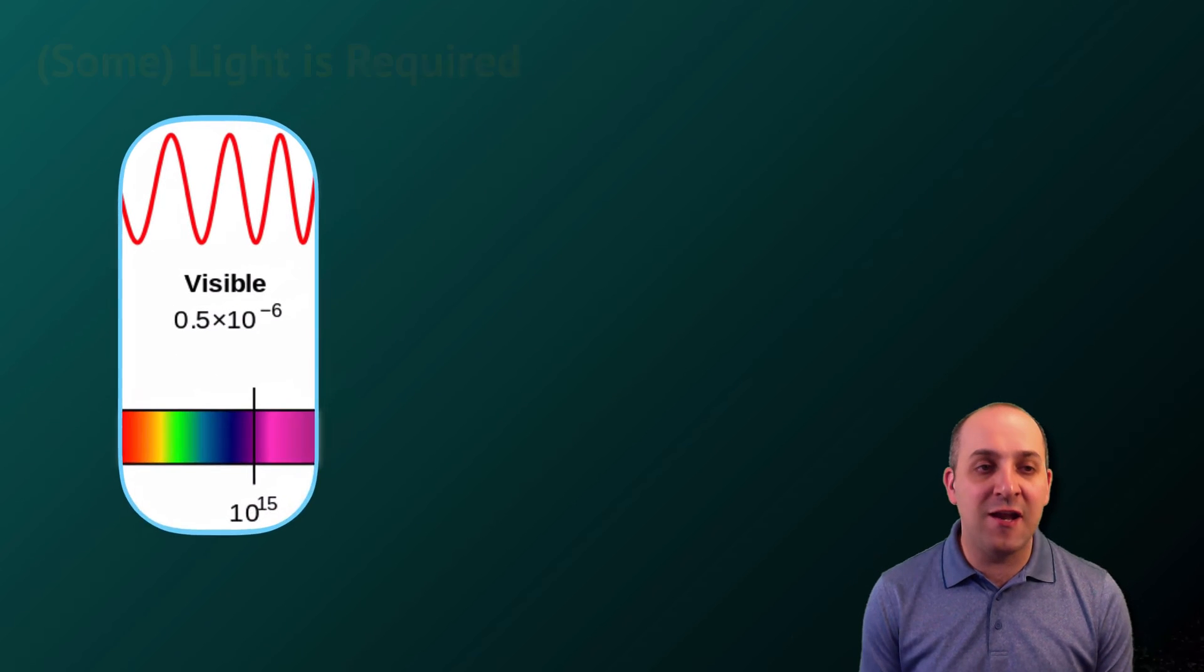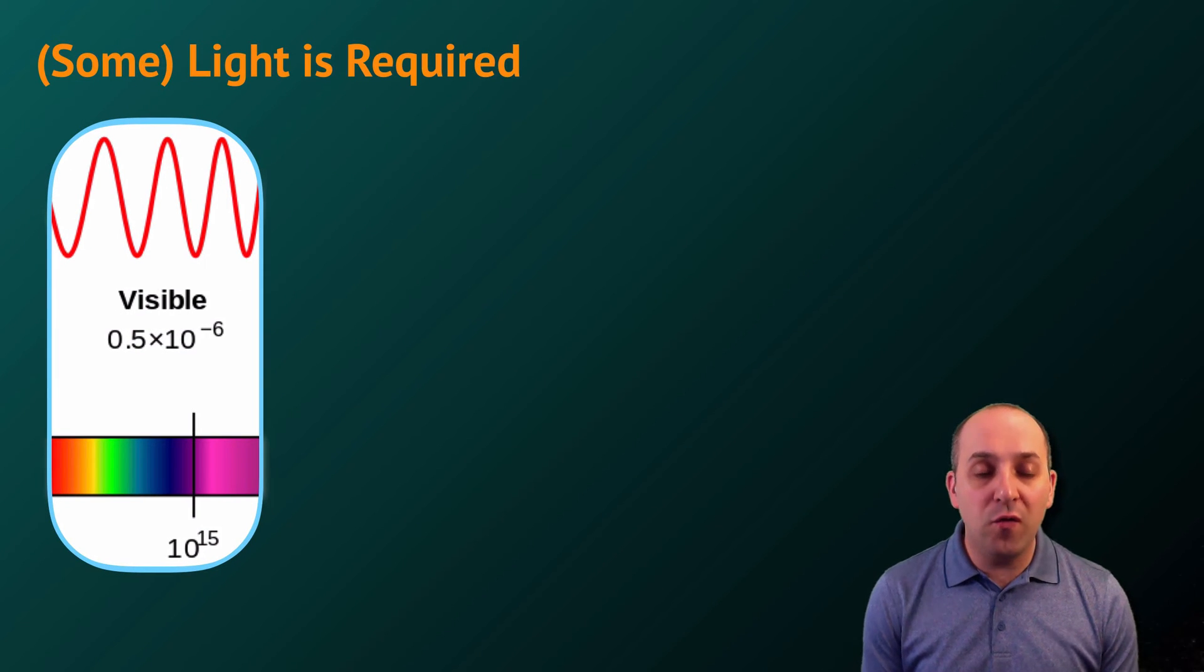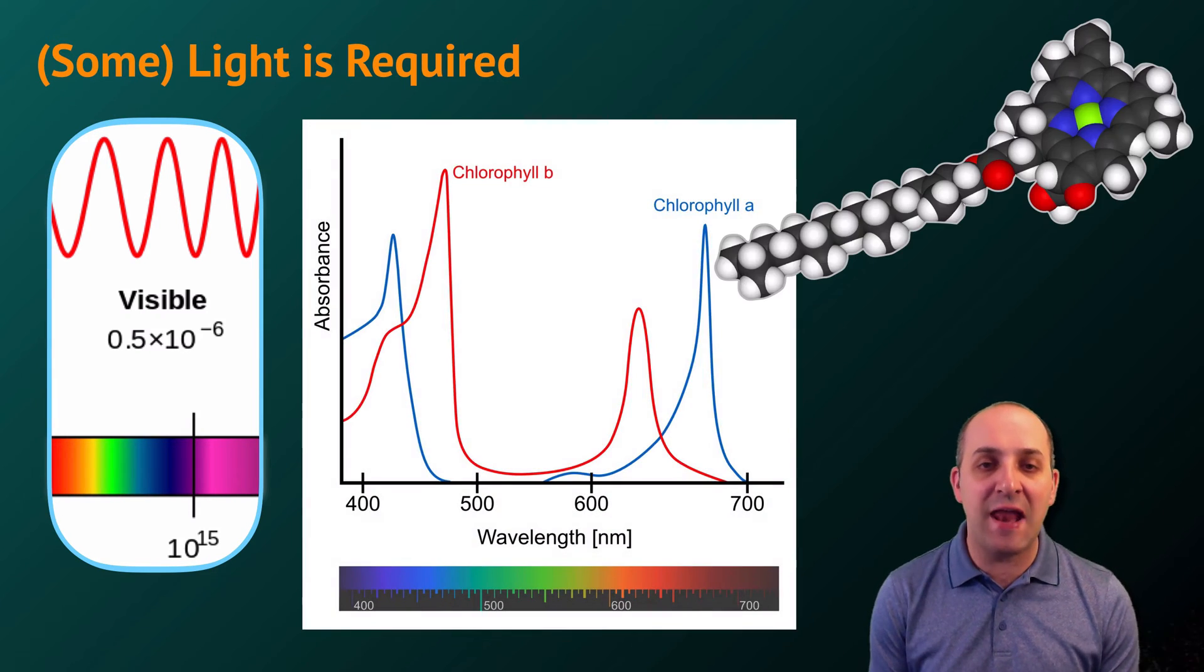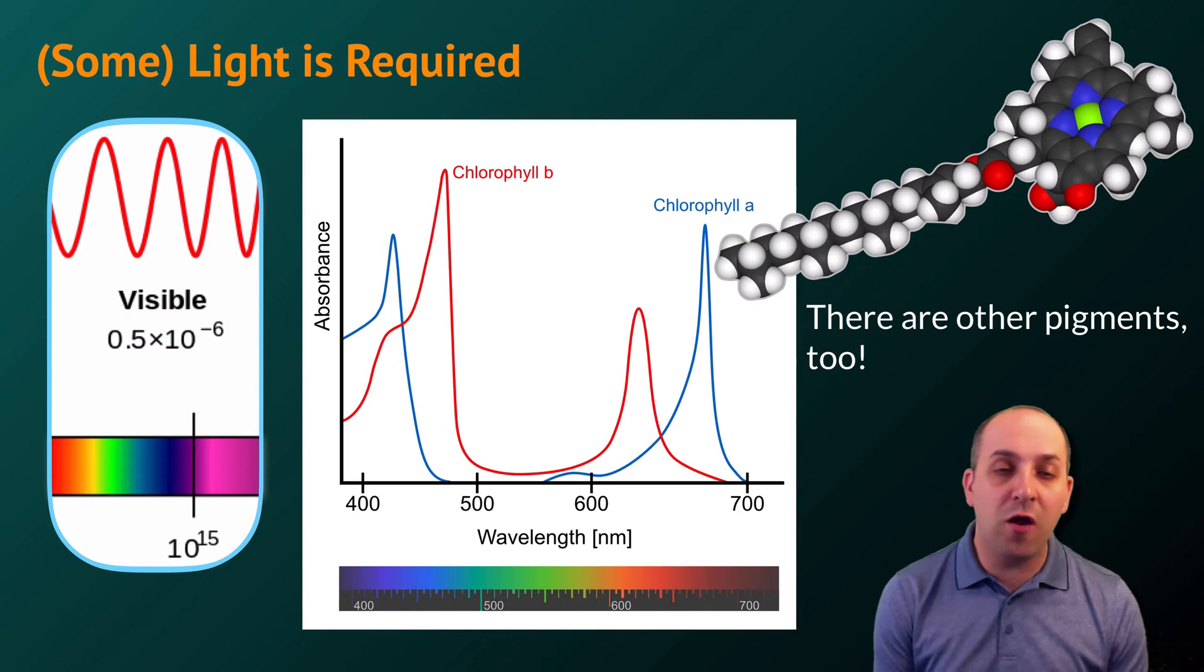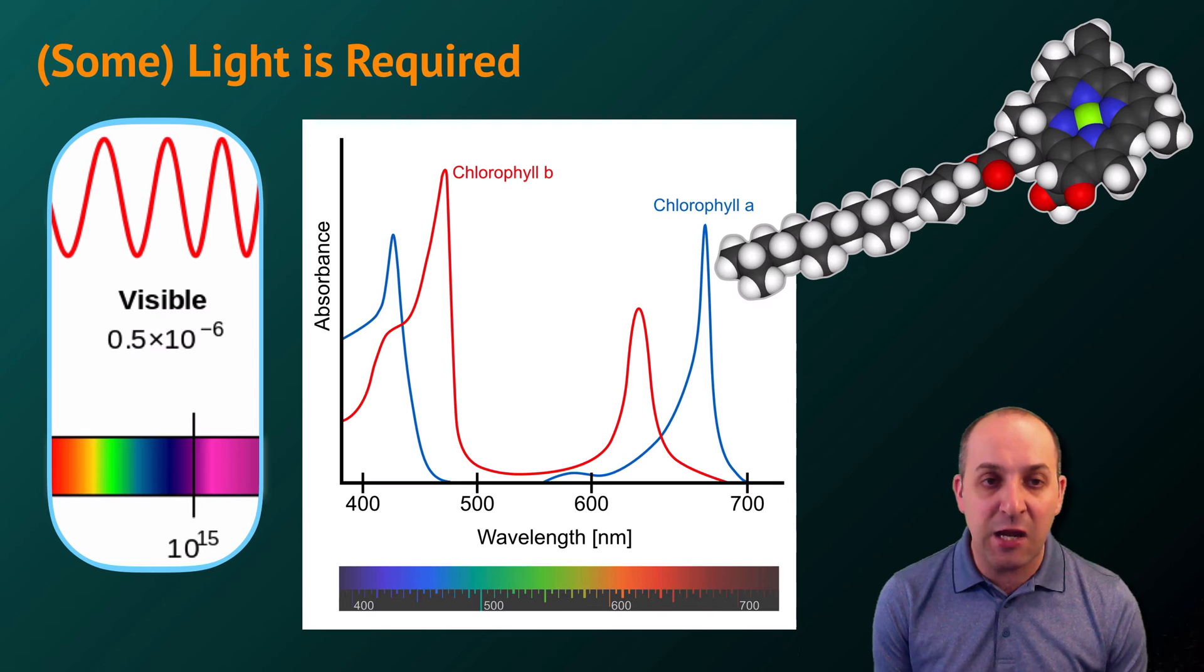But we're not even interested in all of the visible light. We're only interested in specific wavelengths. The molecules that capture electromagnetic radiation and use that energy to drive photosynthesis are pigment molecules, molecules like chlorophyll A and chlorophyll B. Notice that the chlorophylls do not absorb all of the wavelengths of visible light equally.